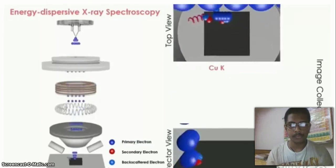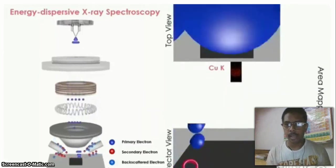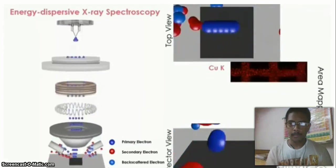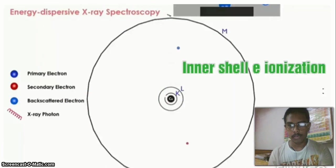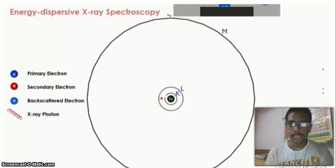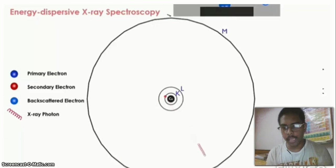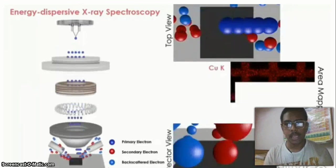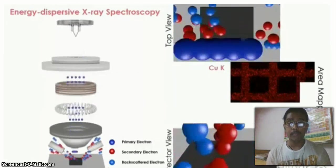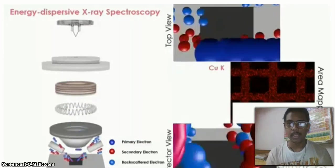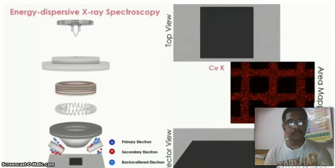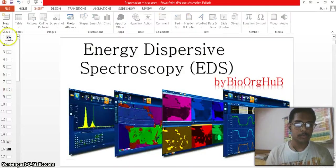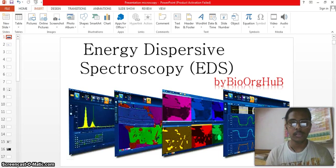The primary electron beam falls on the specimen surface, causing ionization along with X-ray generation. At the atomic level, the primary electron beam hits the inner orbital electron, which gets ionized, and then a higher energy electron comes to fill that gap, generating X-ray. This X-ray is captured by a detector. Each element generates a different energy of X-ray, so you can get a clear idea of which atoms are present on the surface. That's all for the concept of EDS spectroscopy — hope you understood. If you have any doubt, ask in the comment box.